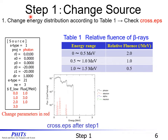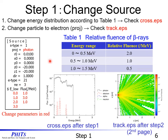Let's go on to Step 1: change source. First, please change the energy distribution according to Table 1, and check cross.eps after Step 1. The changed parameters are shown in the sample file in red. Next, please change the particle from a photon to an electron, and check track.eps on the second page. You can see those sample figures.